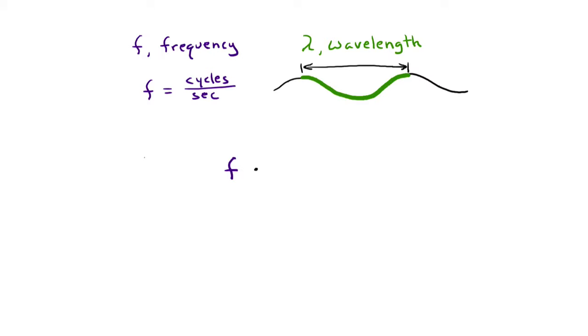Look what you get when you multiply a wave's frequency by its wavelength. Follow the units. You've got one per second times a unit of distance, such as meters. That gives meters per second. Sound familiar? Yep. Those are the units for speed.